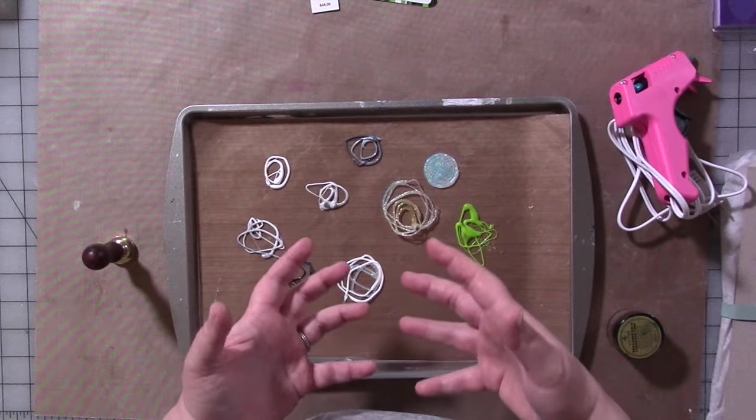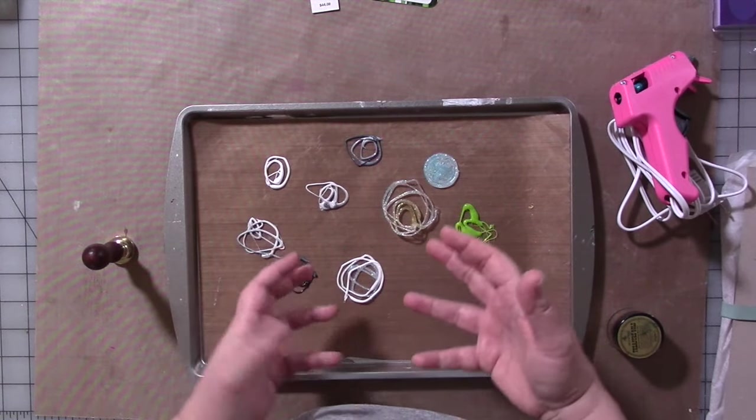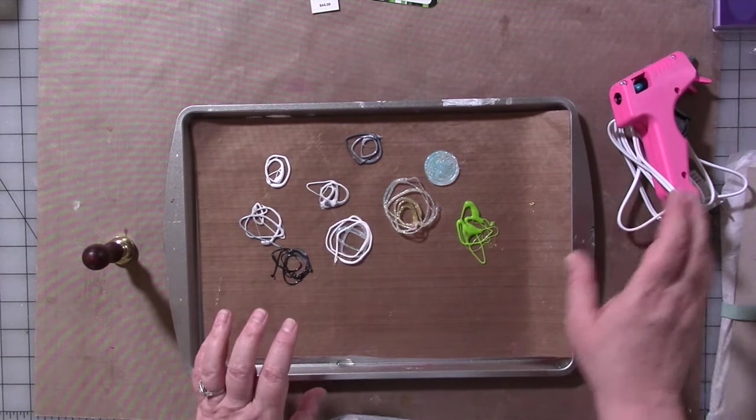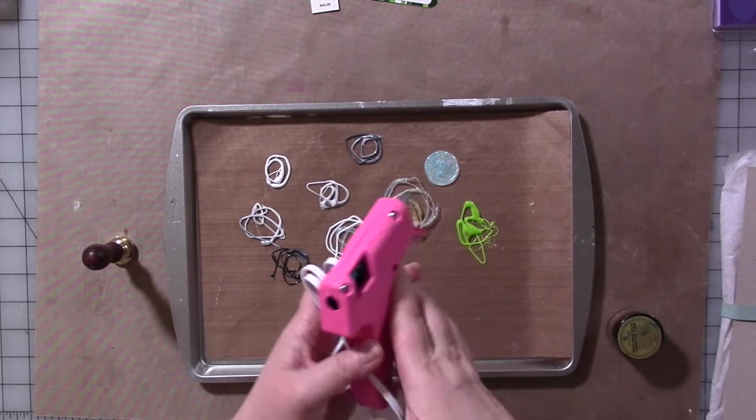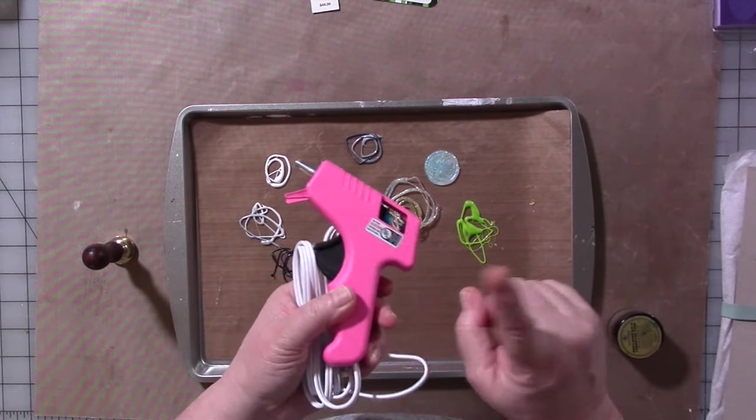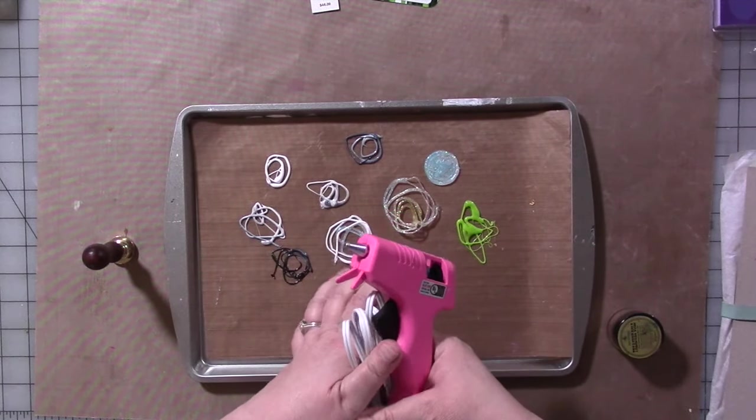I do know they sell colored hot glue periodically at the dollar store. That will be the next place I get it because Hobby Lobby is a little pricey. By the same token, I thought the glue gun was a pretty good deal. I do know sometimes they have these at Dollar Tree too. But this was only four bucks so I was okay with spending that.